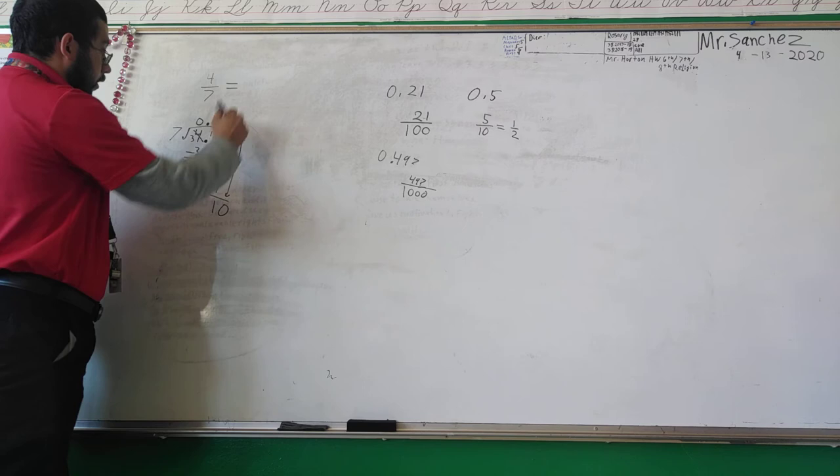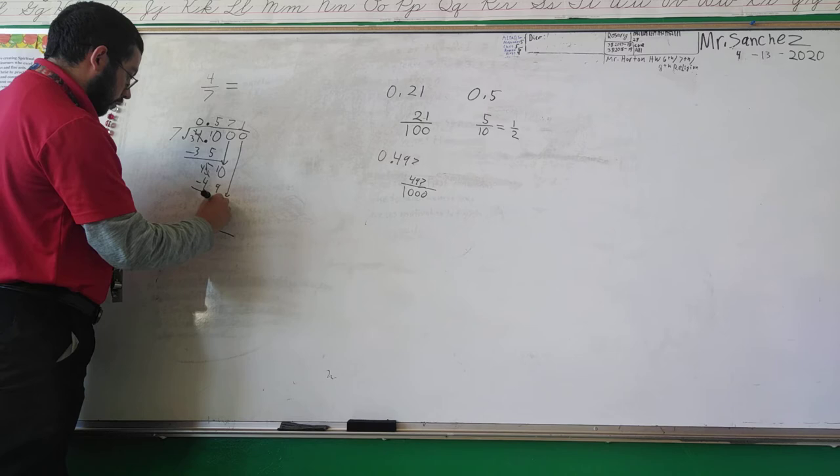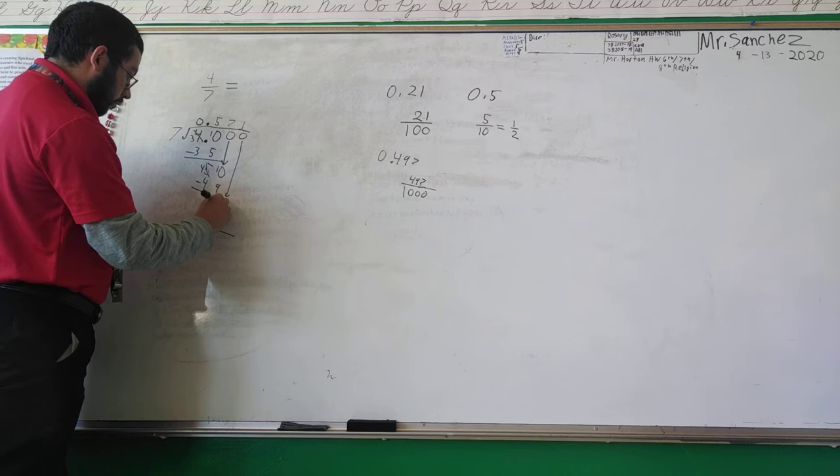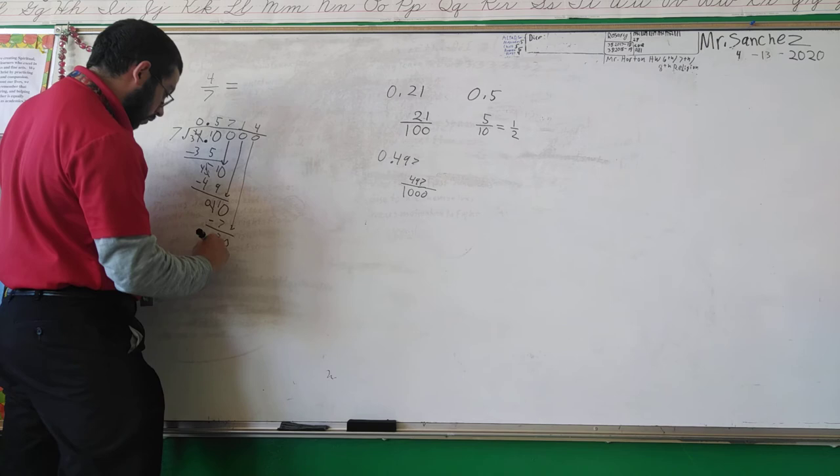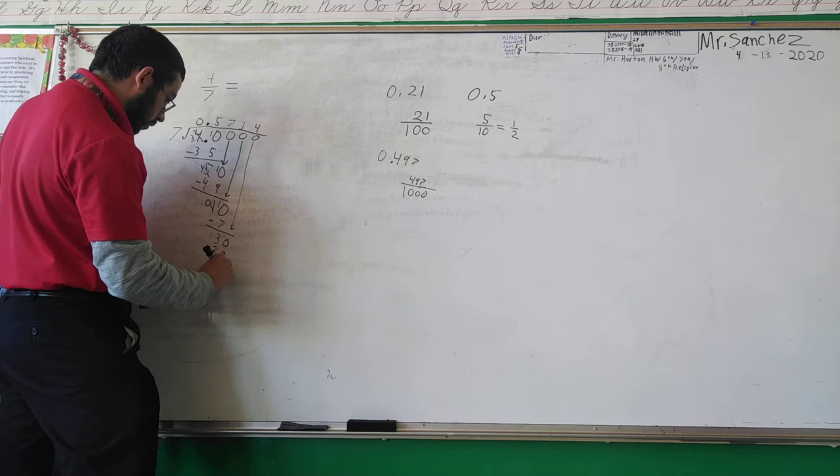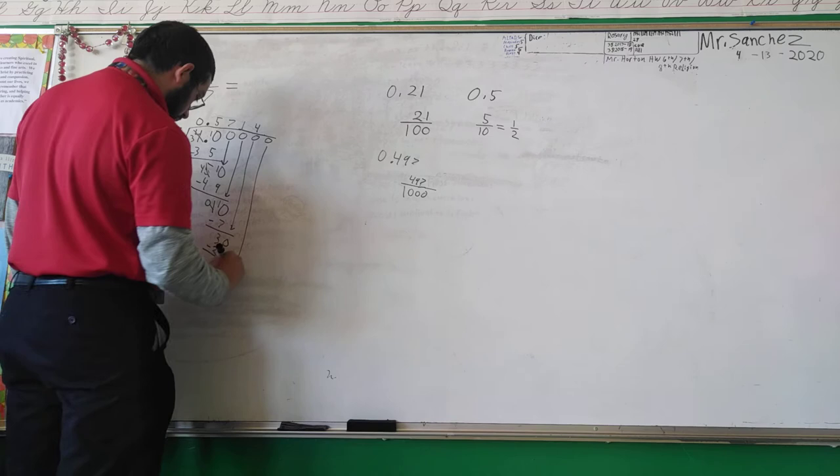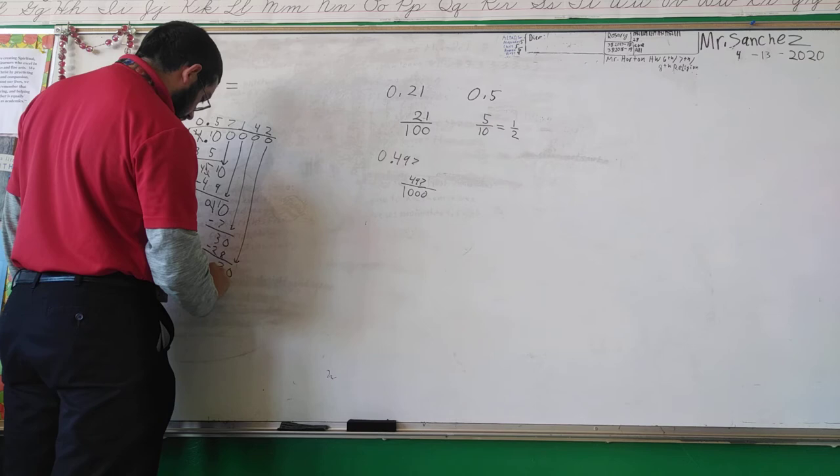Okay. Looks like seven goes into ten one time. And that leaves us with three. Then, let's go ahead and add another zero. This one will go in four times. All right. Then, if we added another zero. Now, we'll go in two times.